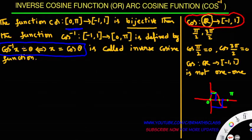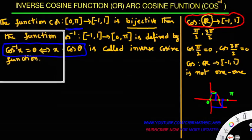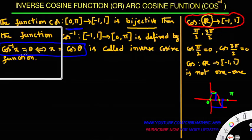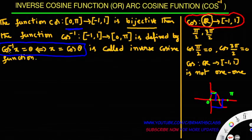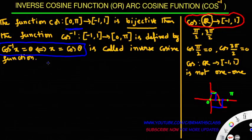While doing problems, if you see anywhere cos inverse x equals to θ, that can be written as x equals to cos θ. Cos inverse x equals to θ can be written as x equals to cos θ — you can think of it as simply taking cos inverse to the other side, and it becomes cos θ. That's it. So this is the definition of inverse cosine function, and there are five points you have to remember from the definition of inverse cosine function.